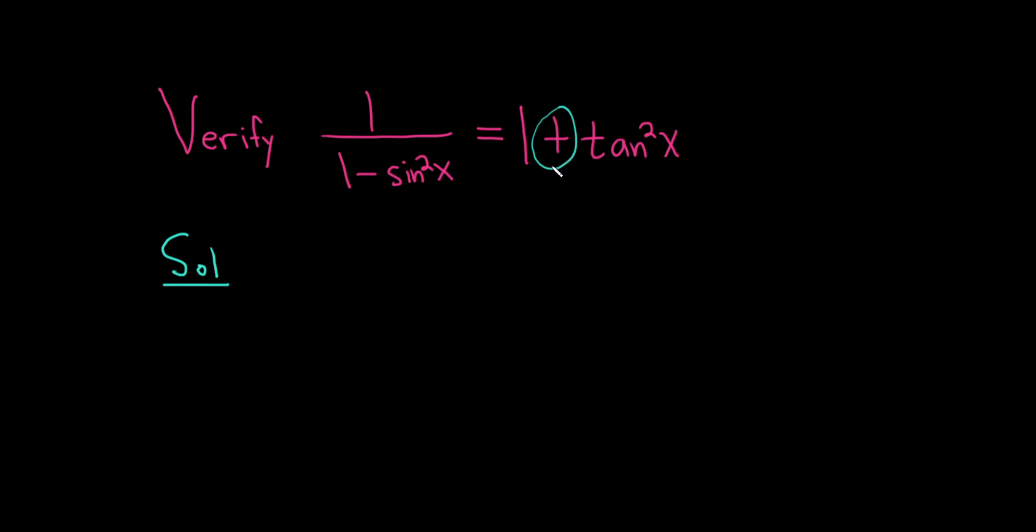So let's start by writing down the right-hand side. So this is 1 plus tan squared x. Okay, and this is equal to... And so the goal is to get to this side here.